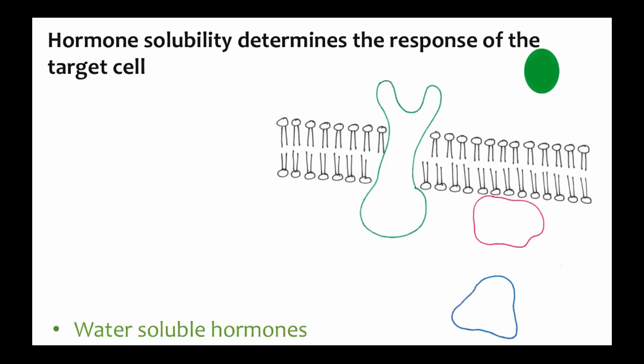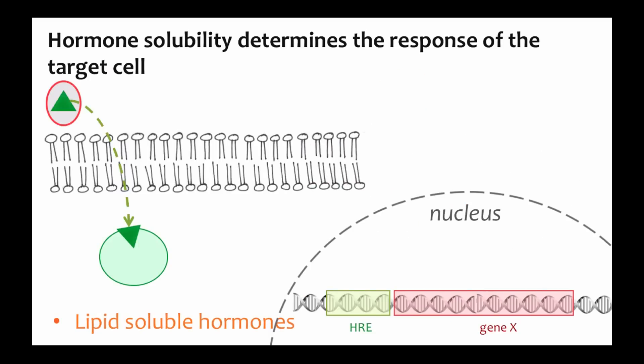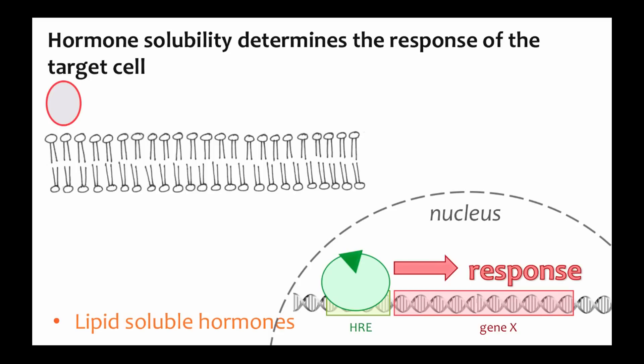This difference in where receptors are located means the two different types of hormones have different effects on the cell. Water-soluble hormones bind to their receptor on the outside of the cell, and binding triggers a response inside the cell, usually through a series of biochemical events called a signal transduction pathway. Lipid-soluble hormone receptors typically interact directly with the DNA. The receptor binds the hormone, and this triggers the receptor-hormone complex to enter the nucleus and bind to a special control region in the DNA called a hormone response element. The binding of the hormone and its receptor to the DNA results in a change in gene expression.